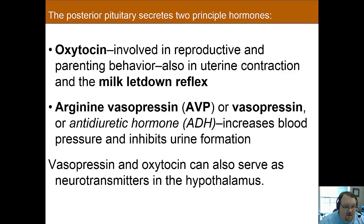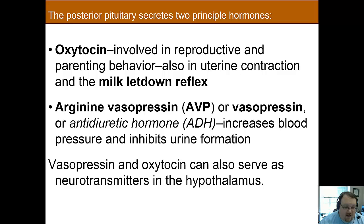Vasopressin increases blood pressure by causing blood vessels to contract, which also inhibits the formation of urine. This is important for maintaining homeostasis during times when water is scarce. If someone is thirsty, vasopressin will be released to help conserve water and maintain homeostasis for as long as possible.